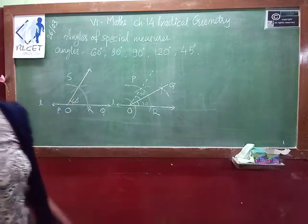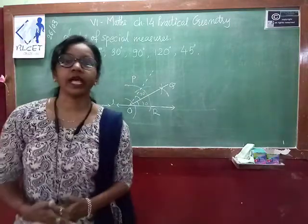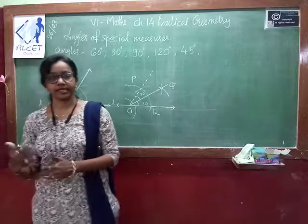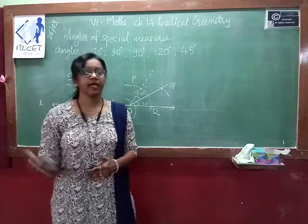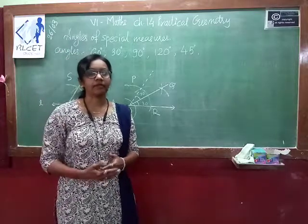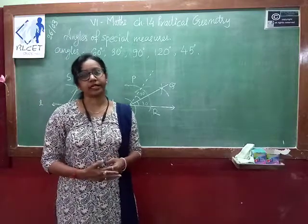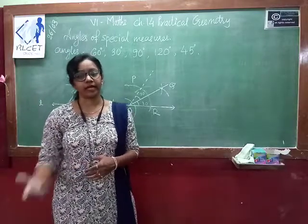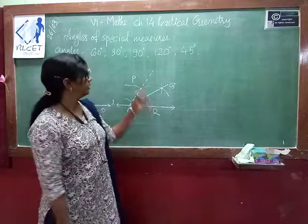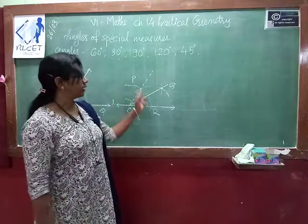So to construct 30 degrees, first construct 60 degrees, then bisect the 60 degree angle so that you get 30 degree angles.